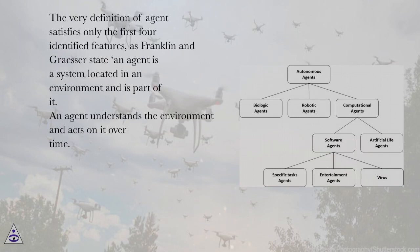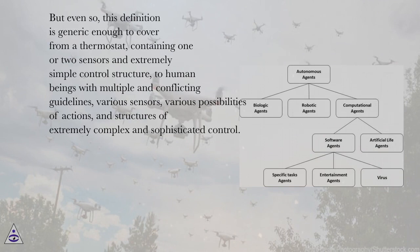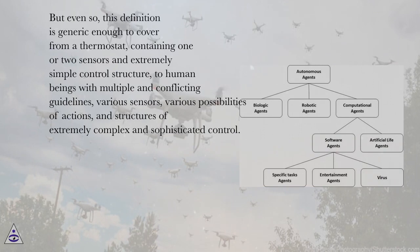The very definition of agent satisfies only the first four identified features. As Franklin and Grasser state, an agent is a system located in an environment and is part of it. An agent understands the environment and acts on it over time, and has its own agenda in order to reflect its perceptions of the future. But even so, this definition is generic enough to cover from a thermostat containing one or two sensors and an extremely simple control structure, to human beings with multiple and conflicting guidelines, various sensors, various possibilities of actions, and structures of extremely complex and sophisticated control.